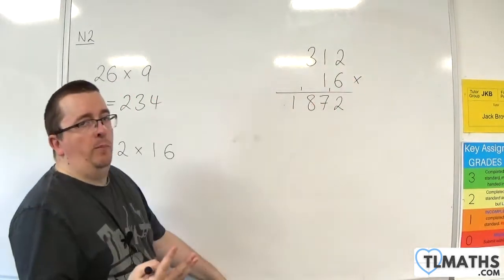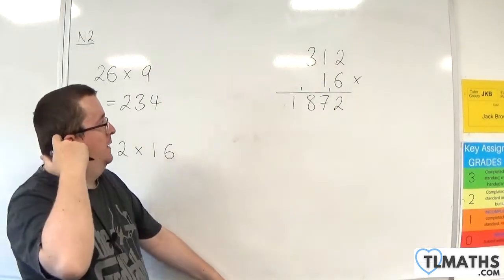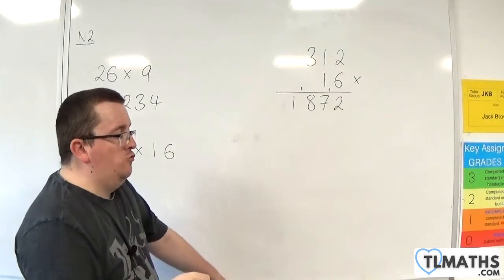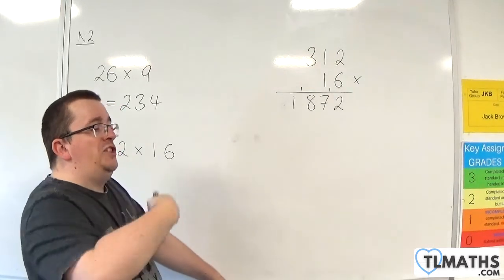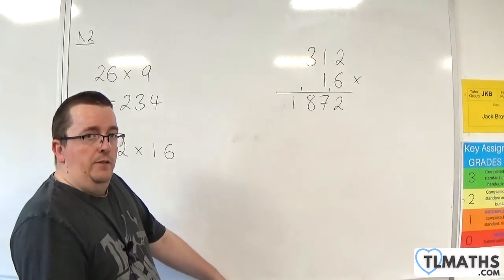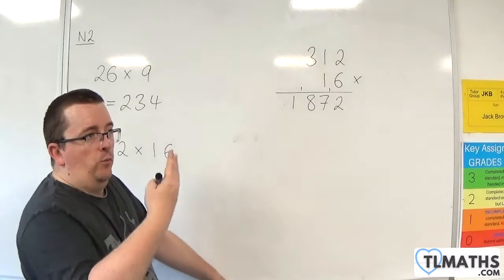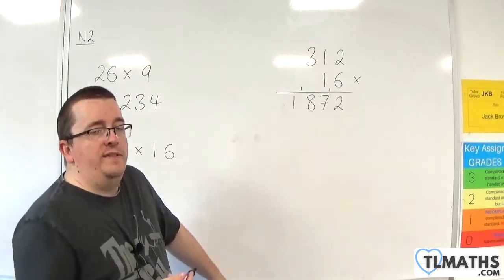Now, when we were multiplying by multiples of 10, or powers of 10 rather, earlier on, I essentially just add a 0 onto the end. That was one of the trick ways of seeing how you multiply an integer by 10.